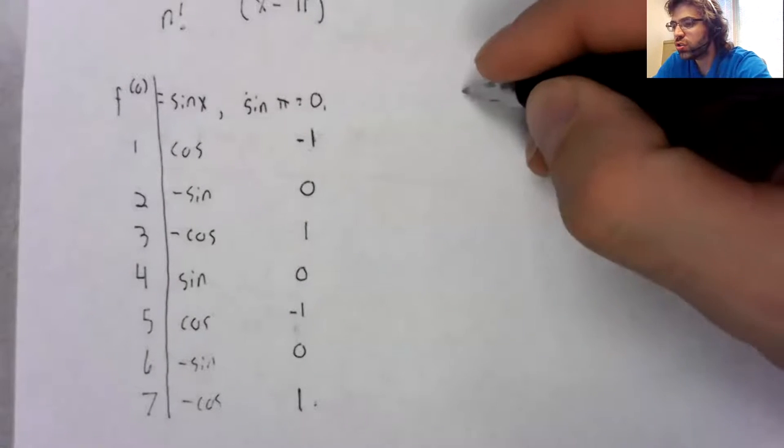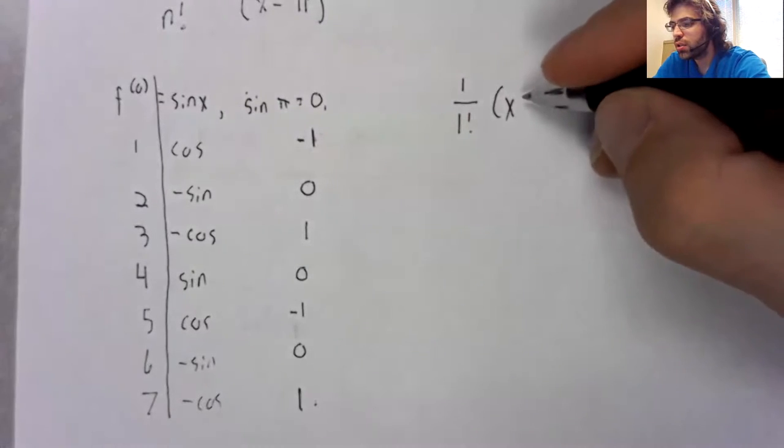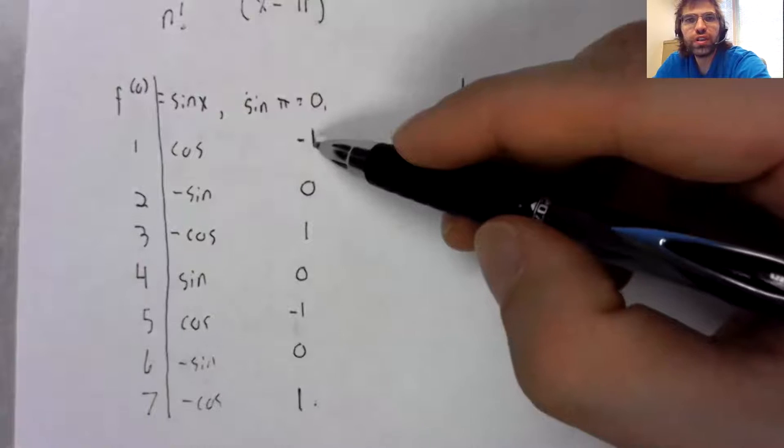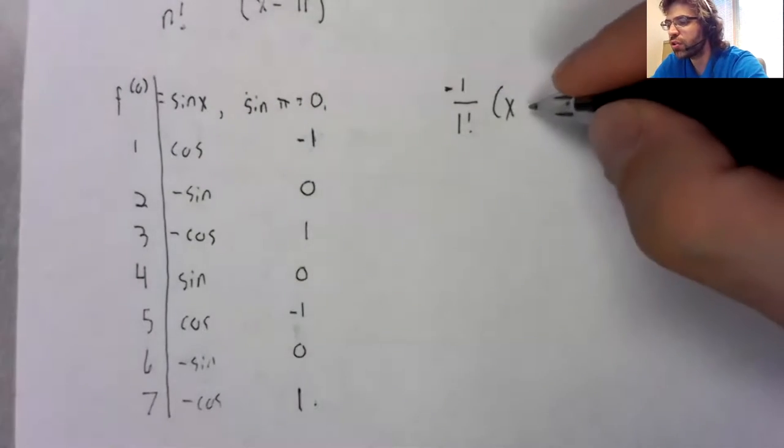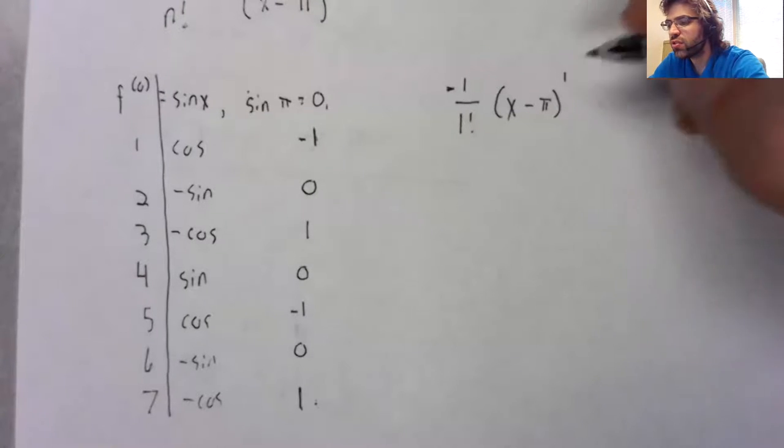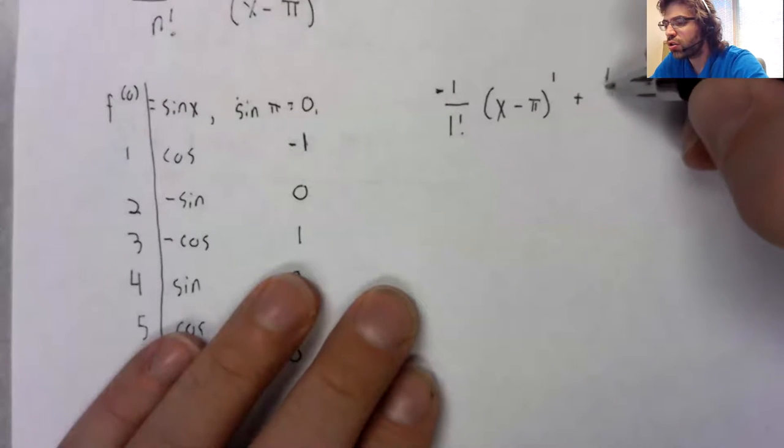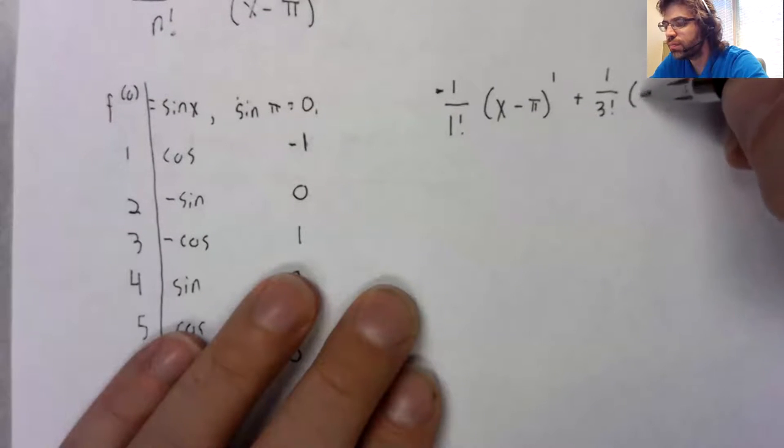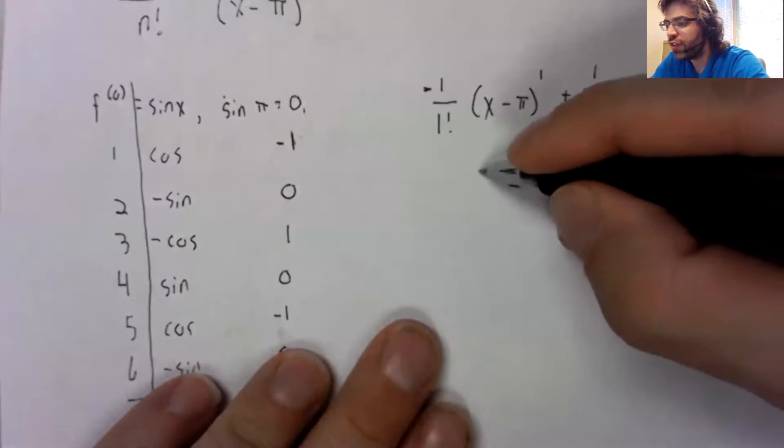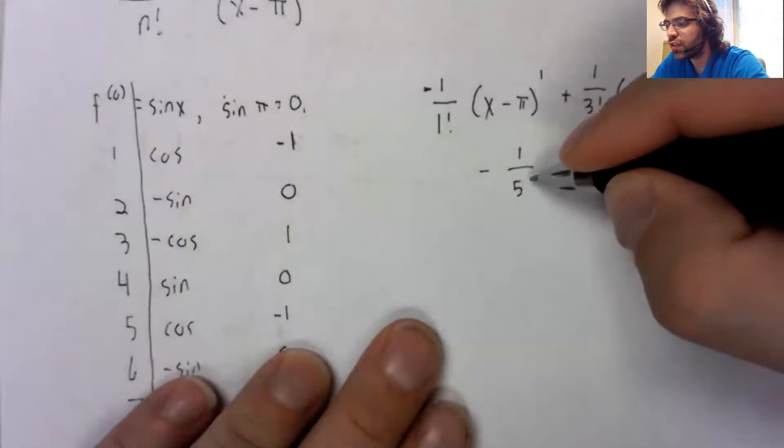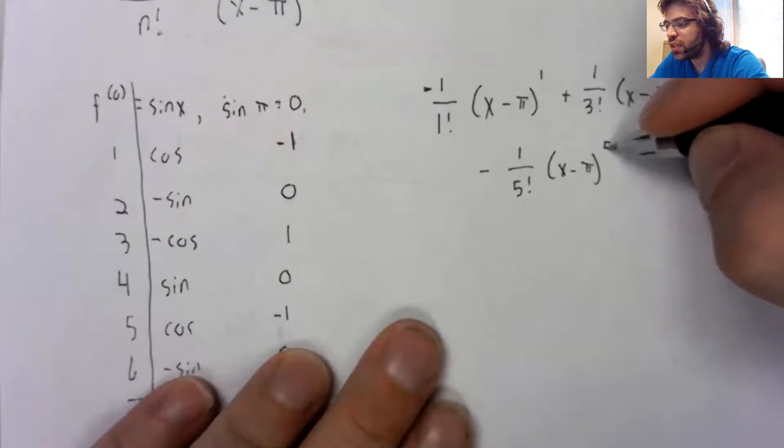So the first derivative over one factorial, the first derivative is negative one, sorry. The first derivative over one factorial times x minus pi to the first. The third derivative is one. The fifth derivative is one. The seventh derivative is negative one.